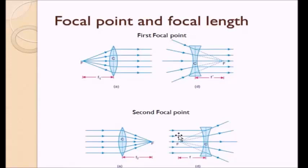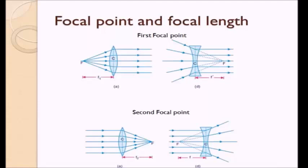Now that we have seen all the terminologies, let us note certain key points. For the convex lens, the focus is a real point, whereas for the concave lens it is imaginary — the ray of light doesn't really come there. With this, we now know about the different terminologies related to the lens for both concave and convex lenses: focal point, principal axis, optical center, and radius of curvature. I will close today's lecture with this.